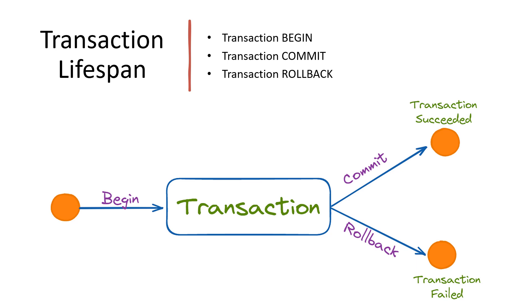The lifespan of a transaction typically follows a specific lifecycle with key stages. First, transaction begin: the transaction begins with the initiation of a transaction context. This step marks the starting point and sets the boundaries for the subsequent queries to be included. Next, transaction commit: once all the necessary queries have been executed successfully within the transaction, a commit operation is performed. This step finalizes the transaction and makes all the changes permanent, ensuring data consistency.